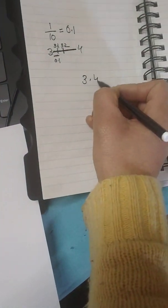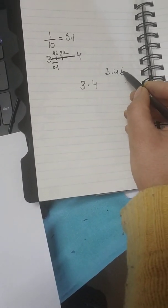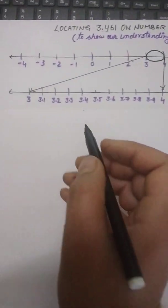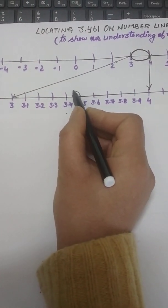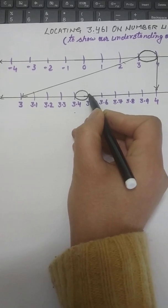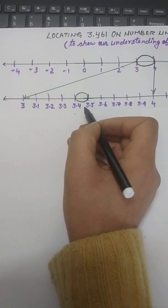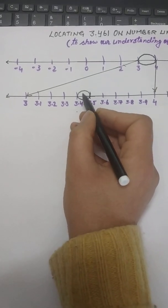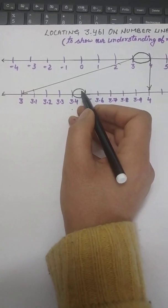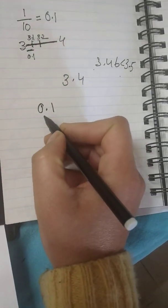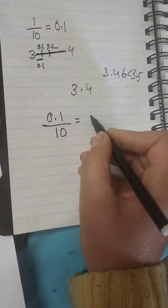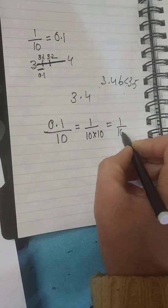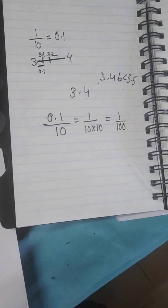So this 3.461 lies between 3.4 and 3.5, not here, because right now we are focusing till the 10th place. So 3.4, 3.46. 3.46 is less than 3.5. I suppose you know this. 3.4 and 3.46. So this number is less than 3.5. So this lies between 3.4 and 3.5, so we will magnify this area now. And we will further do 10 parts here. What is this? What is the width of this?